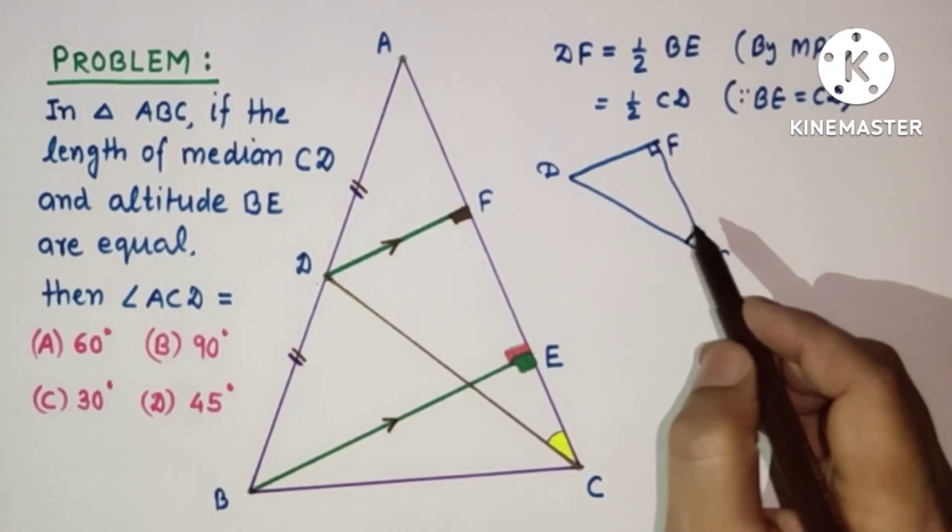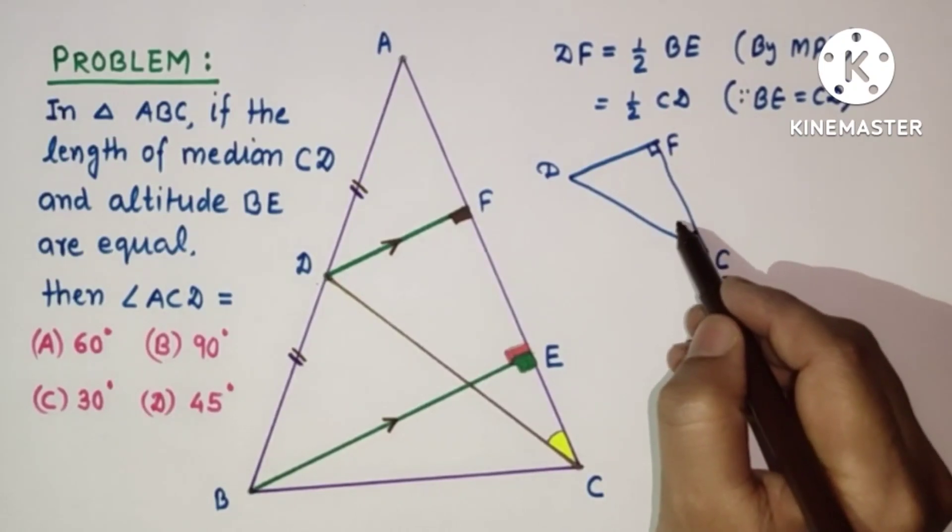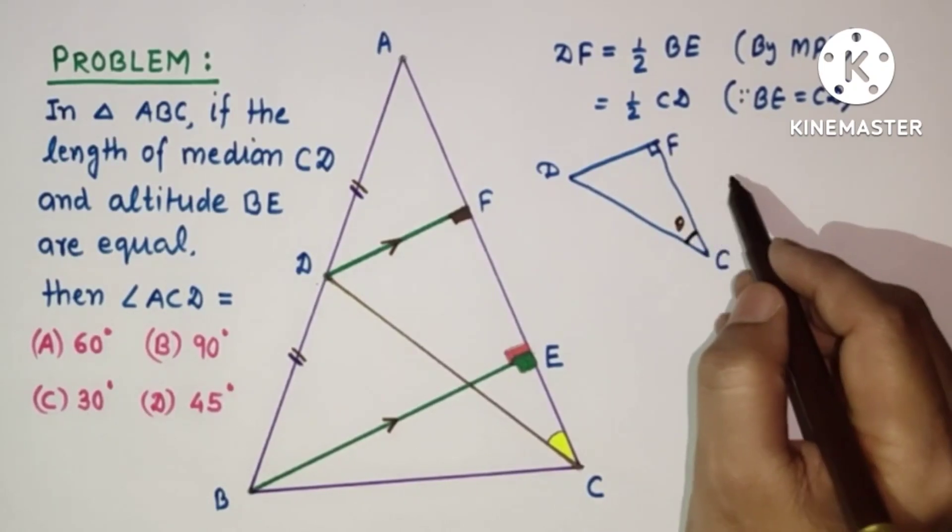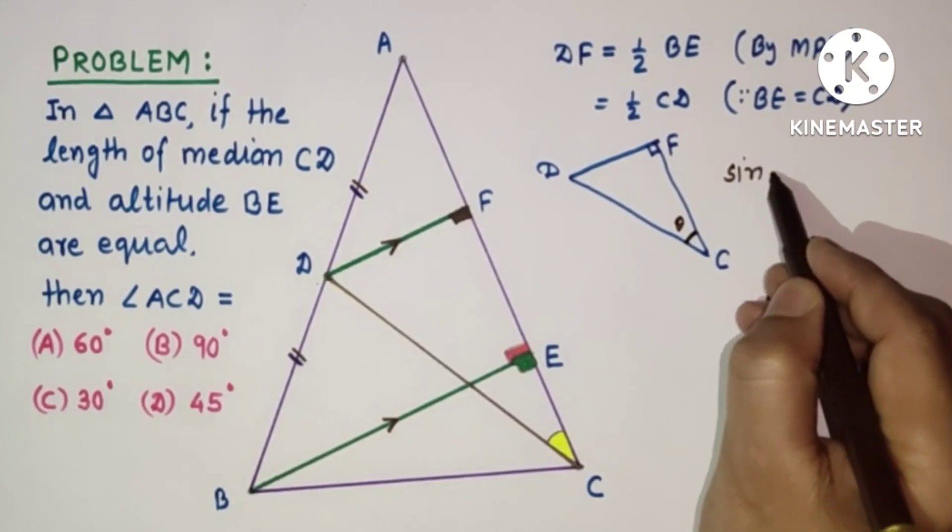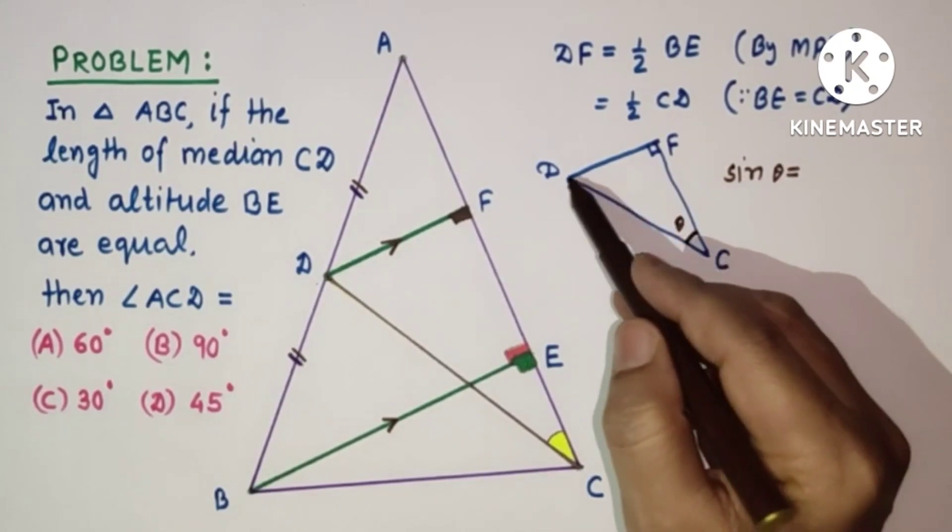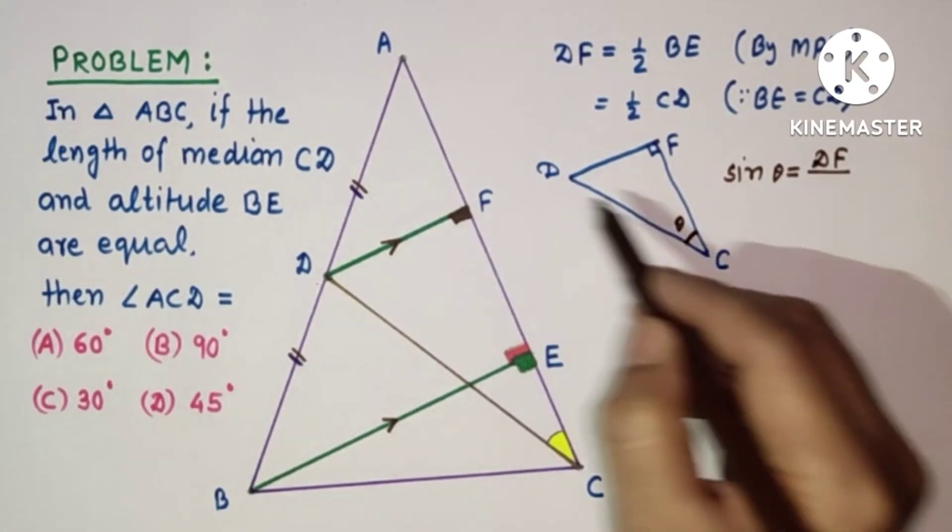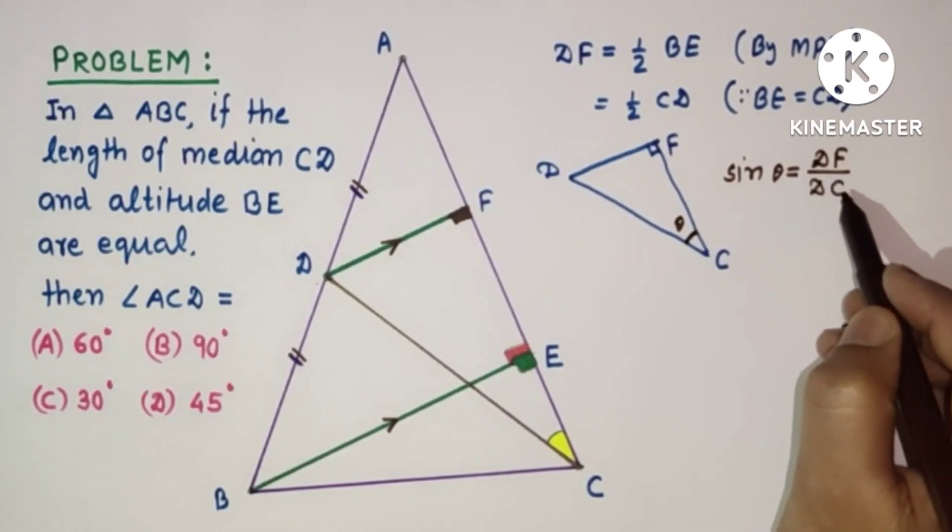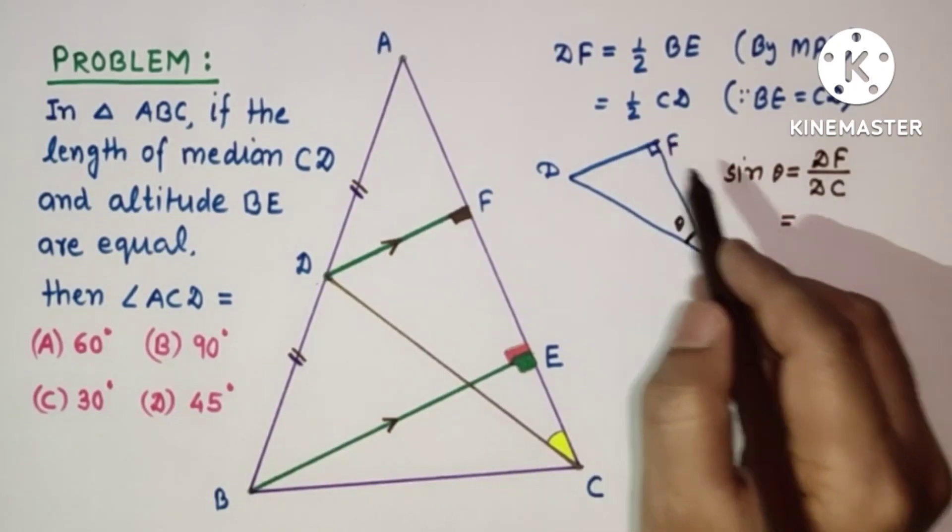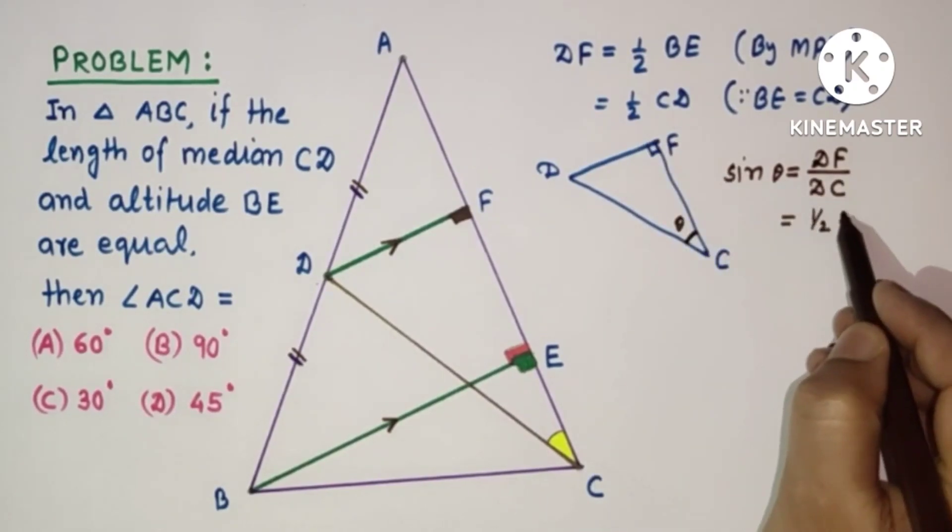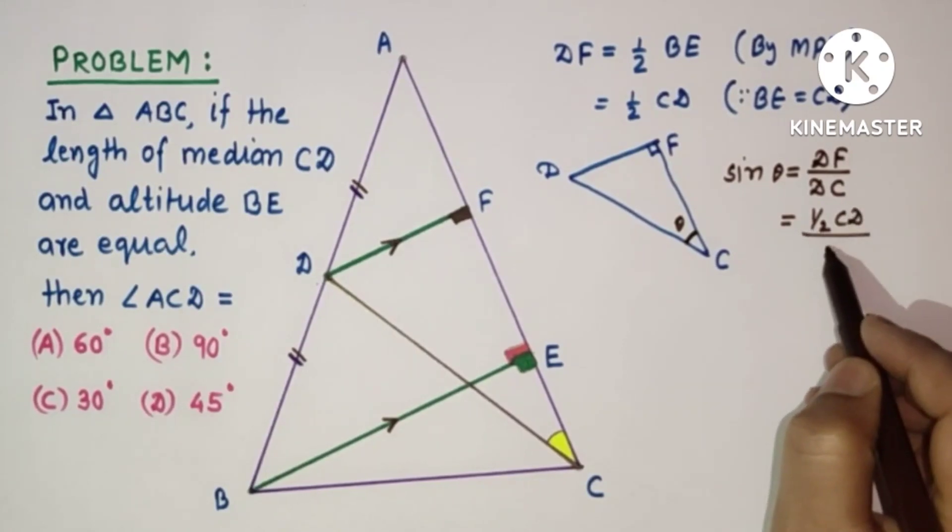If we use trigonometry here, sin theta is equal to opposite over hypotenuse, DF over DC, and DF is half CD.